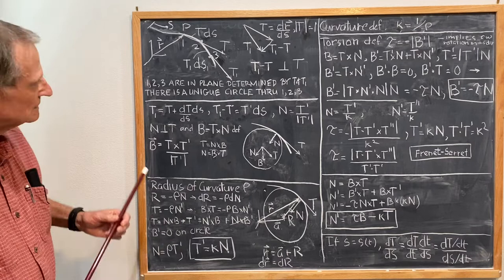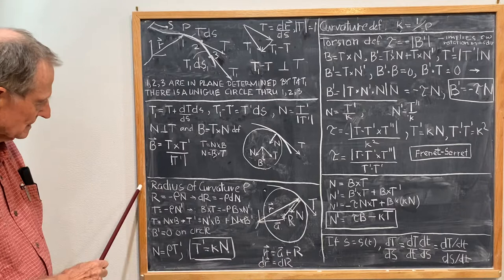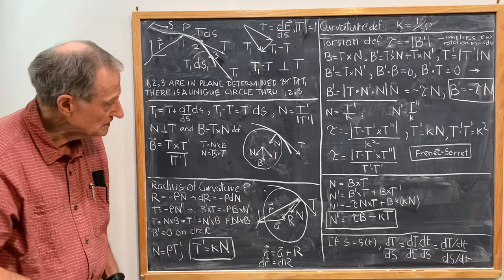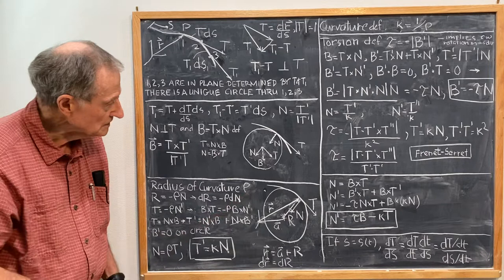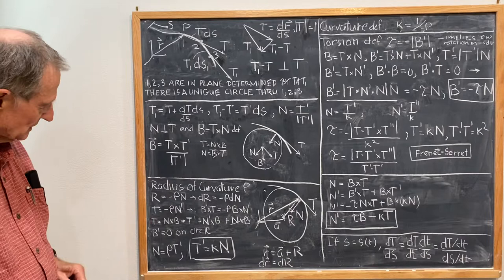And now, with the three TNB frame and the definition, we now come to the first thing, which is the radius of curvature ρ. ρ is the radius of this osculating circle, which is what it's called.